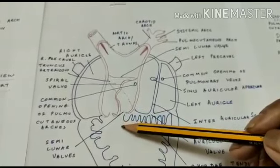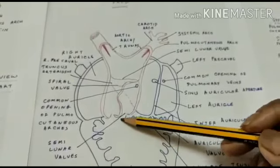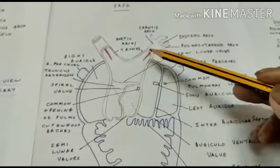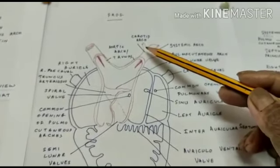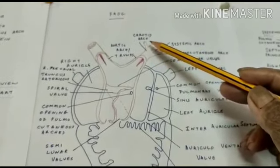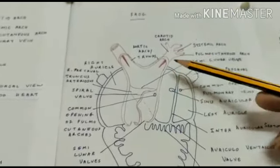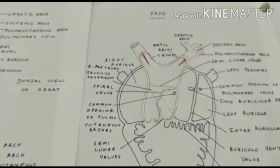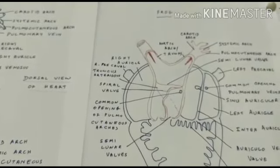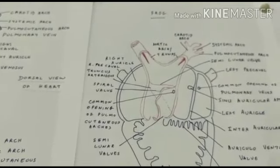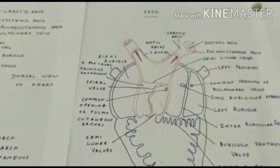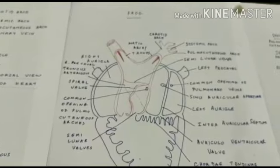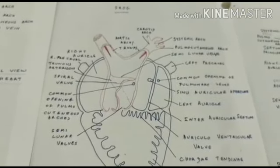Through the ventricle, the pure oxygenated blood goes into the carotid arch, to be carried to the various parts in the anterior part of the animal's body like the brain and head. In other words, the flow of blood is regulated by the spiral valve in the truncus arteriosus, and there are three types of blood according to this mechanism: pure blood taken to the carotid arch, mixed blood taken to the systemic arch, and impure blood taken to the pulmocutaneous arch.